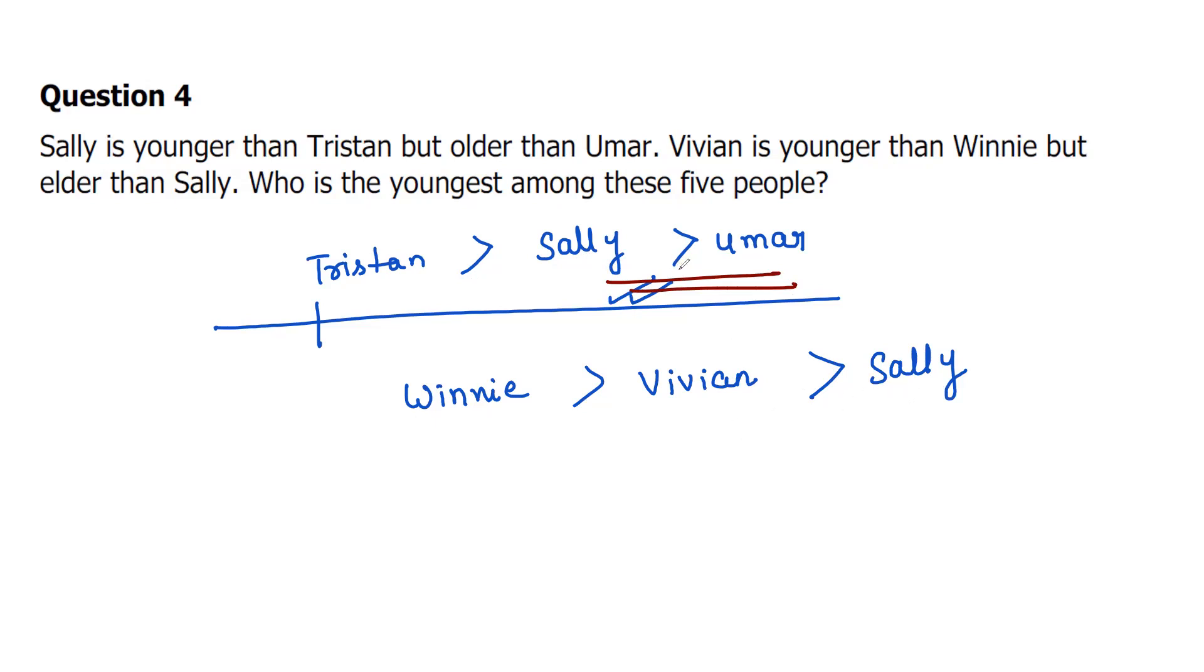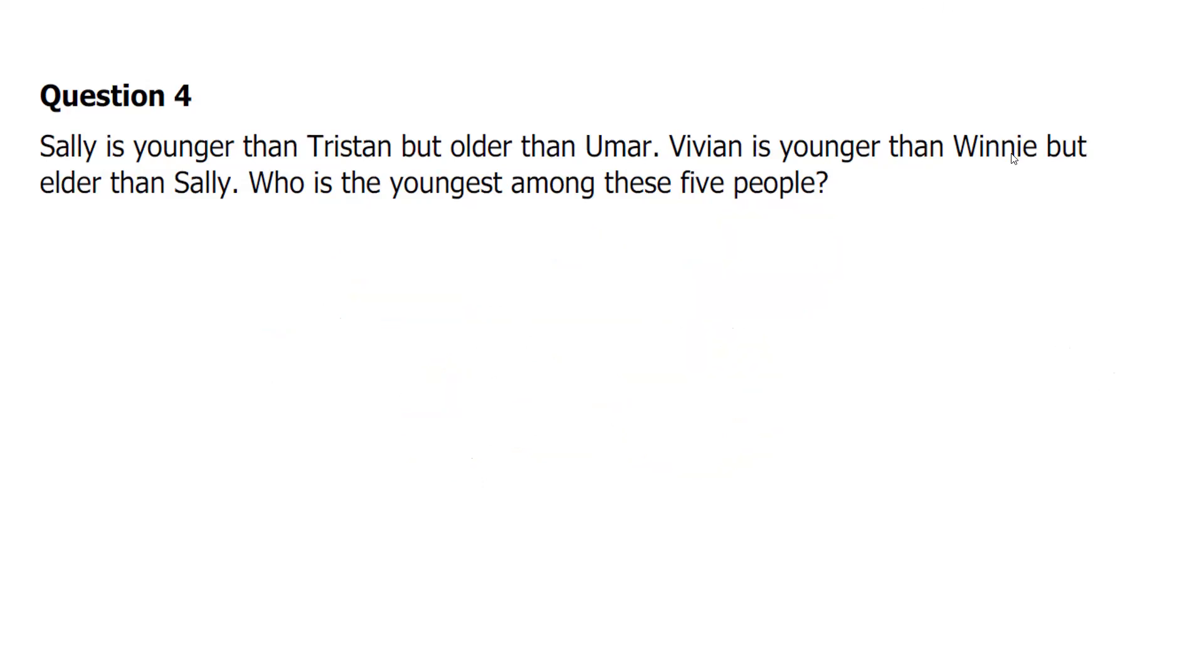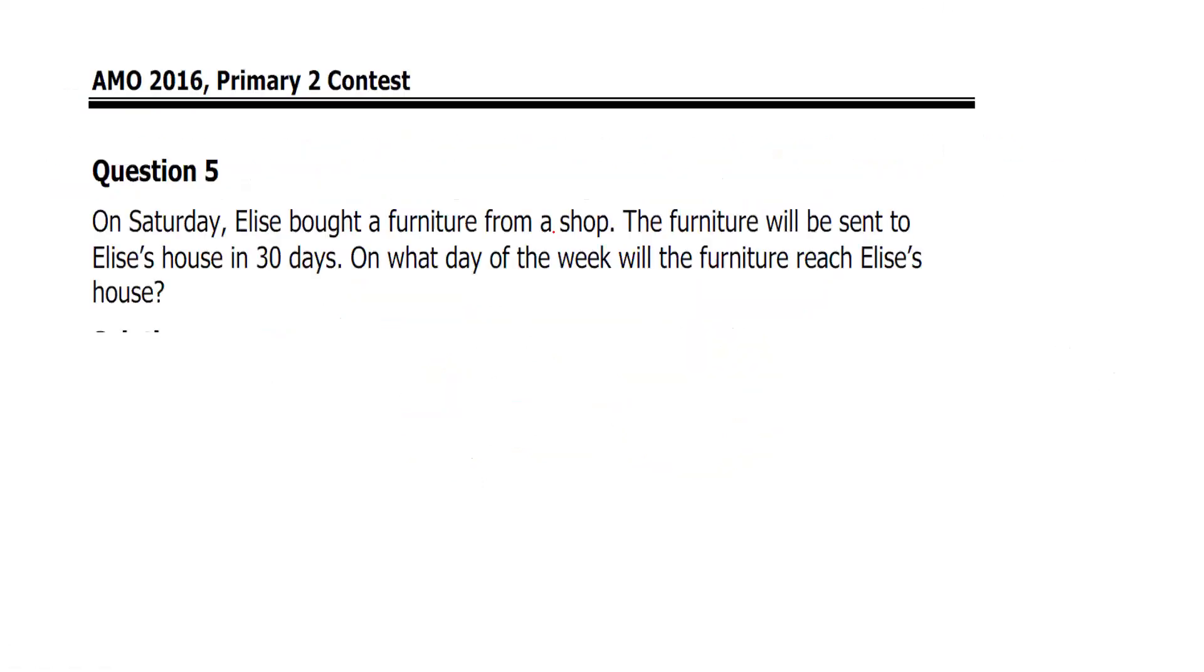And from here can we say that since Sally, Vivian, and Winnie are all greater than Umar, that means who is the youngest? Umar is the youngest among them all. You don't know which position Tristan is in, but definitely we can say that after Sally is Umar. We can place it here, right? So definitely we can say that Umar is the youngest person.